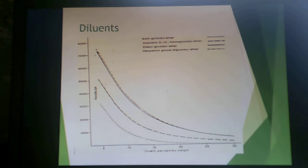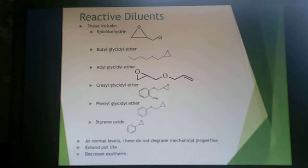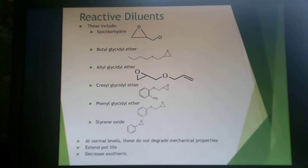A graph shows how diluent percent by weight affects viscosity. Here are some reactive diluents — all of them contain an epoxy ring so they can participate in the epoxy reaction. Examples include epichlorohydrin, butyl glycidyl ether, allyl glycidyl ether, cresyl glycidyl ether, phenyl glycidyl ether, and styrene oxide. At normal levels, these don't degrade mechanical properties, but they extend the pot life and decrease the exotherm.